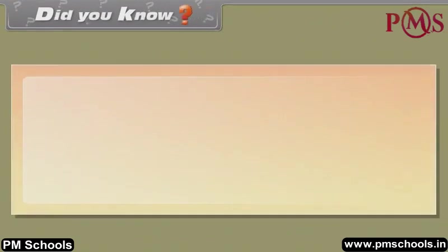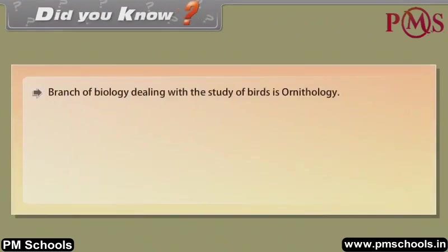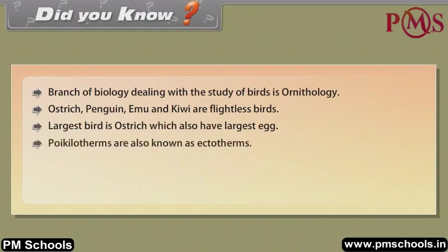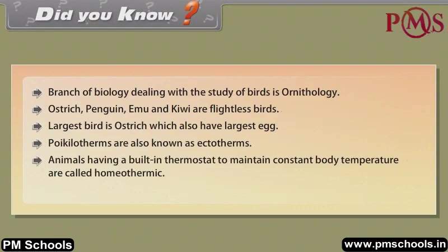Did you know? The branch of biology dealing with the study of birds is ornithology. Ostrich, penguin, emu and kiwi are flightless birds. The largest bird is ostrich, which also has the largest egg. Poikilotherms are also known as ectotherms. Animals having a built-in thermostat to maintain constant body temperature are called homeothermic. The fish which eradicates mosquito larvae is Gambusia.